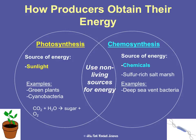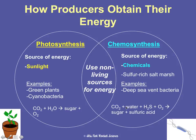Photosynthesis basically takes carbon dioxide and water and makes sugar and oxygen — this is not the balanced equation, just a general equation. Whereas chemosynthesis takes carbon dioxide, water, and sulfur-rich substances and makes sugar and sulfuric acid.